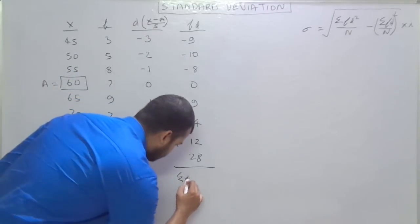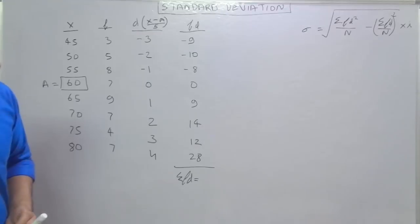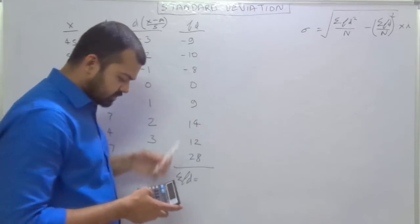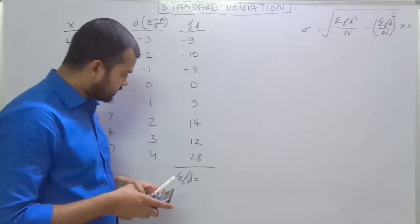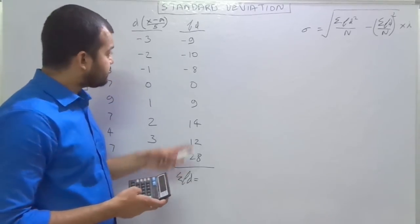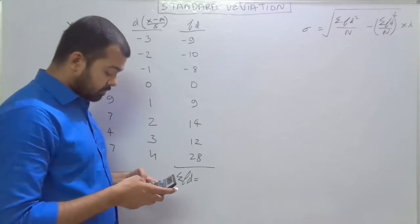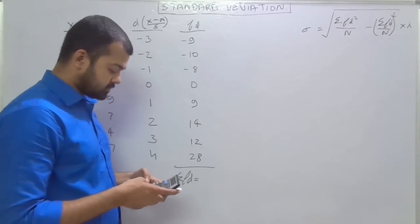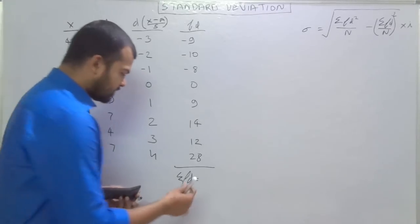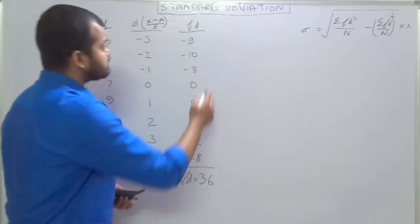So we can do the total of this column. First we calculate the positive values: 9 plus 14 plus 12 plus 28. Then we deduct the negative values: minus 9, minus 10, and minus 8. So the figure comes out as 36. Summation FD is 36.